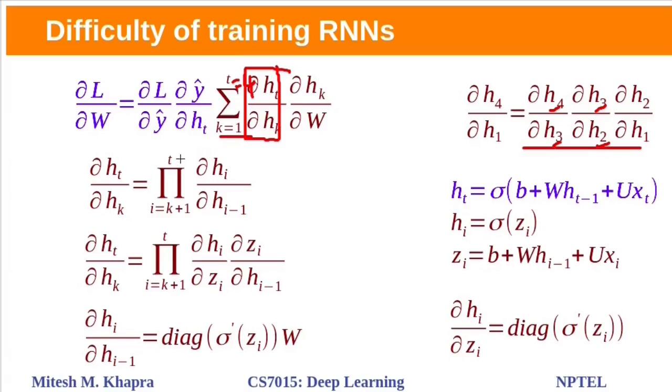If we have very long sequence, means we have very big value for this t, then this product will be very longer. If it is long, what will be the problem? We already know hidden state at time step is a function of previous hidden state multiplied with its weight matrix w.